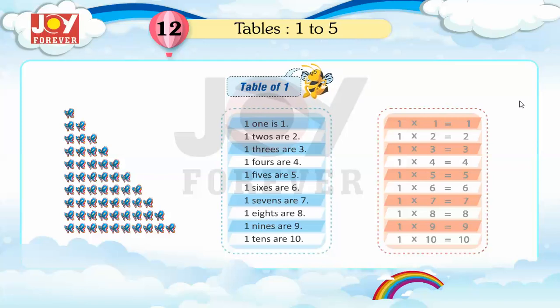1 four are 4, 1 five are 5, 1 six are 6, 1 seven are 7, 1 eight are 8.